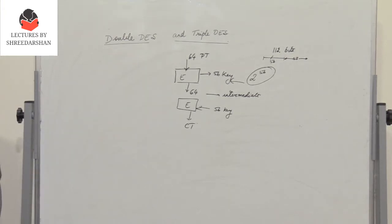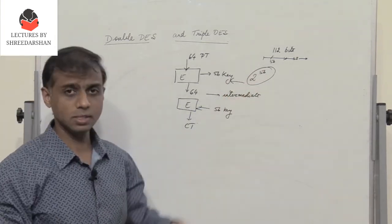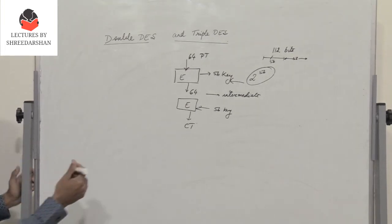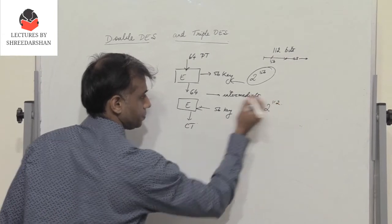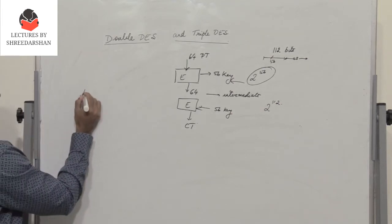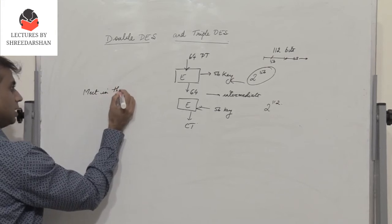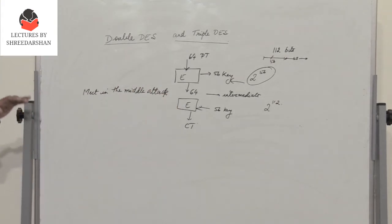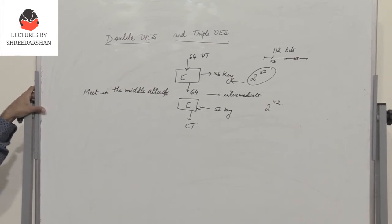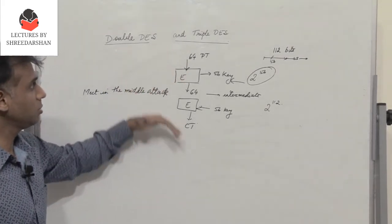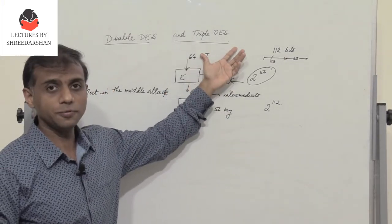We would think that instead of a security of 2^56, since we are using DES twice with a total key of 112 bits, we would expect a security of 2^112. However, because of this intermediate stage, a problem occurs — this is referred to as the Meet-in-the-Middle attack. Because of this attack, Double DES provides only 2^56 security instead of 2^112, and hence Double DES is not used.